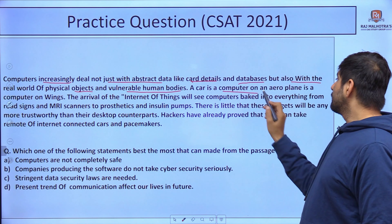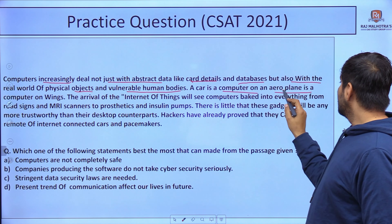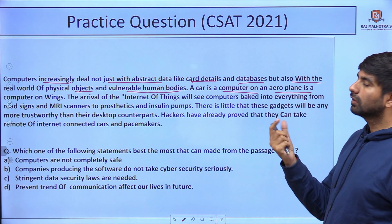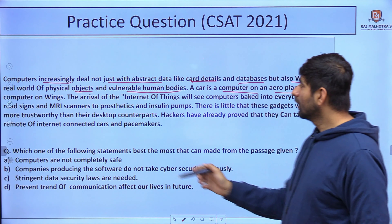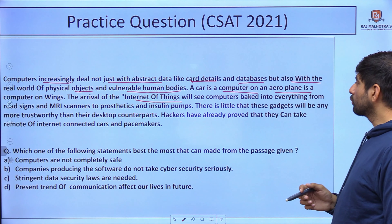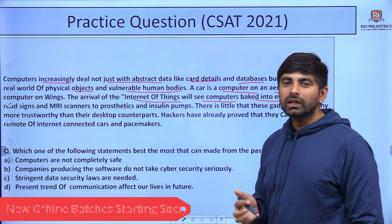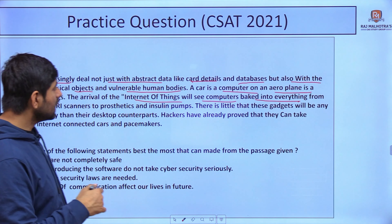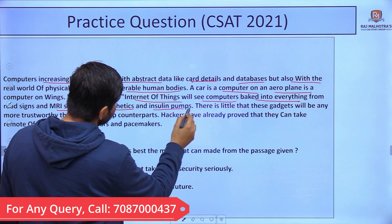A car is a computer; an aeroplane is a computer as well. The arrival of the Internet of Things — IoT, which we generally study in GS portions — will see many computers baked into everything, from road signs and MRI scanners to prosthetics and insulin pumps.